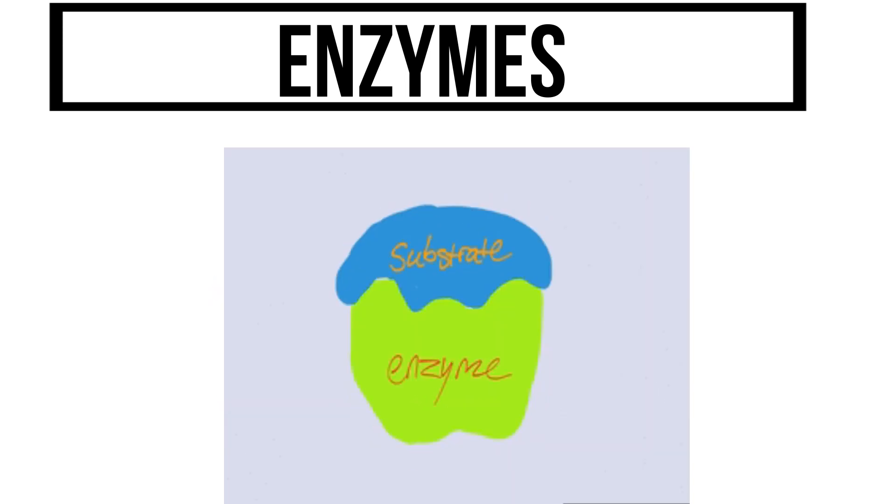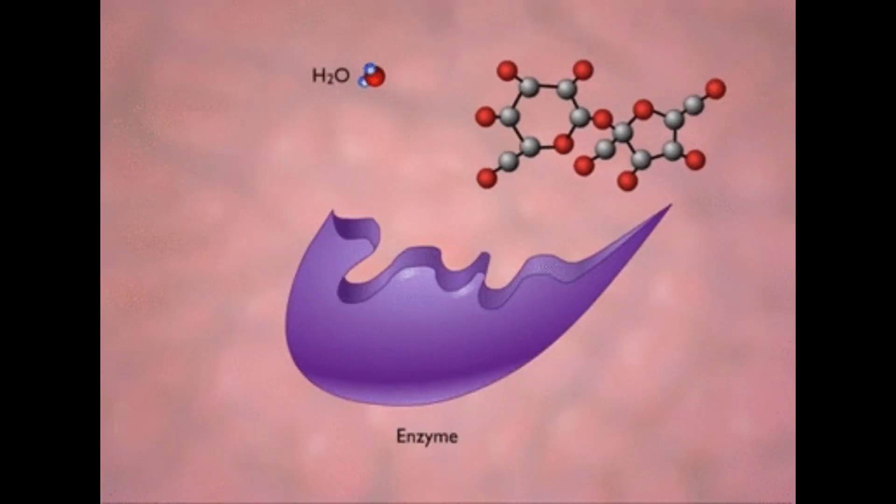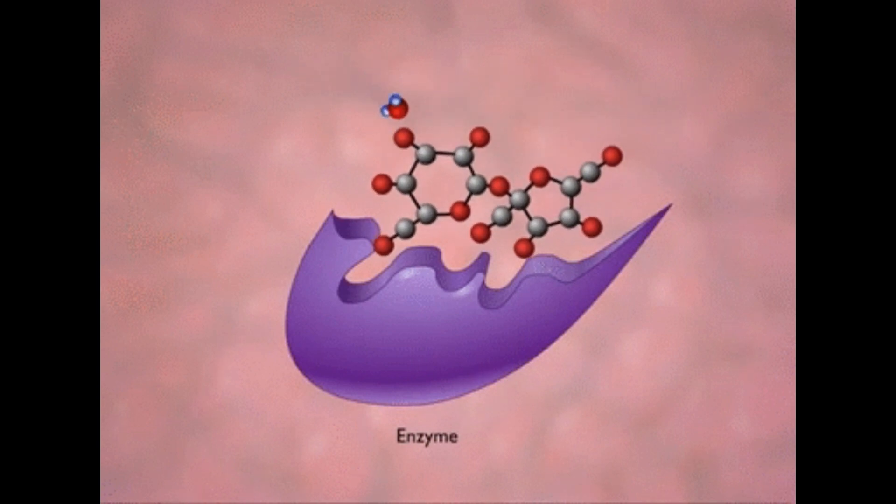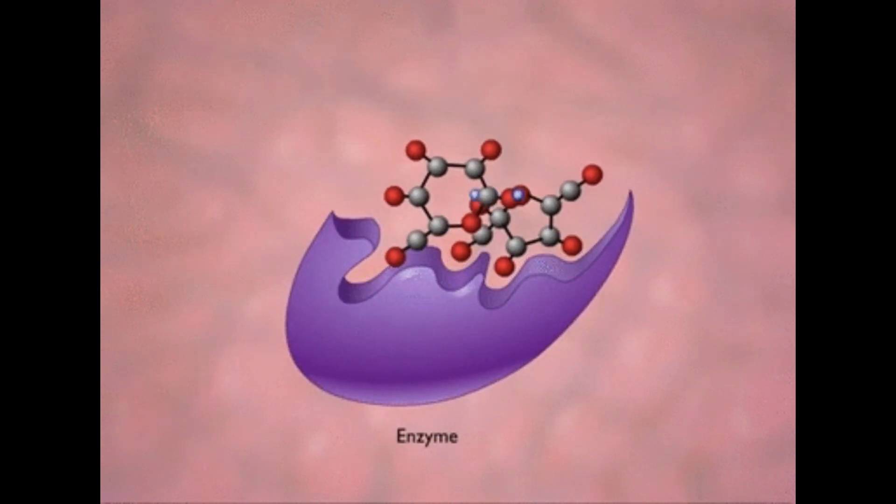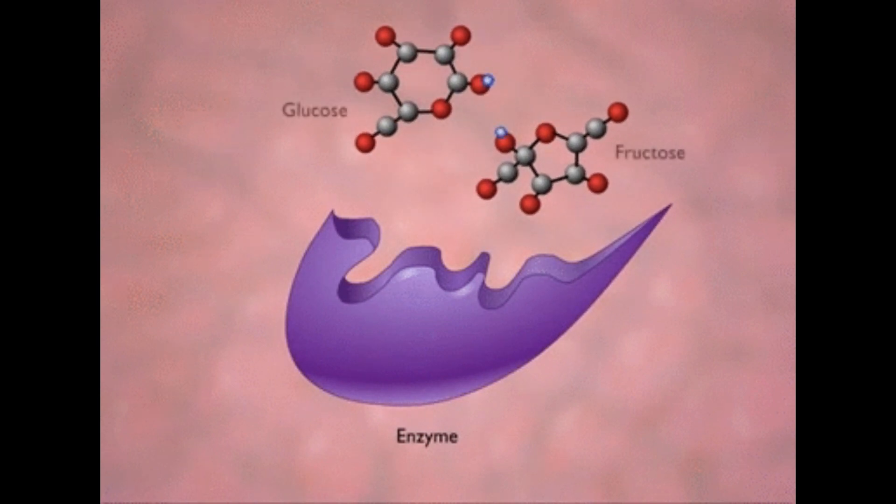The place on the enzyme where the enzyme and the substrate bind is called the active site. When an enzyme bonds to a substrate, the enzyme changes its structure slightly in order to more closely bind with the substrate. This is called an induced fit.